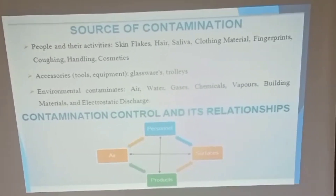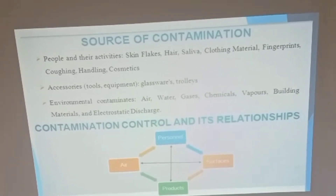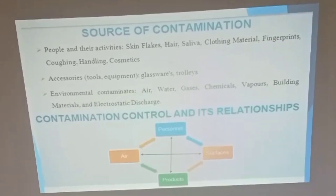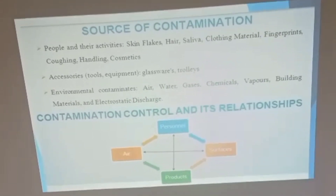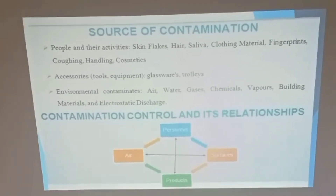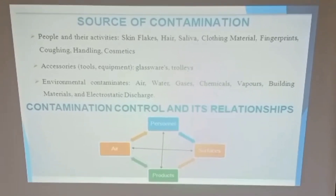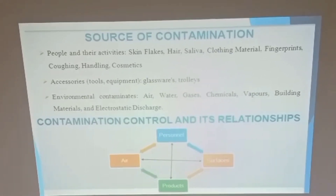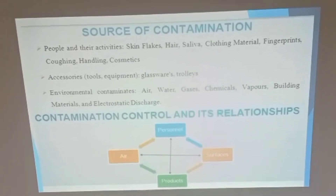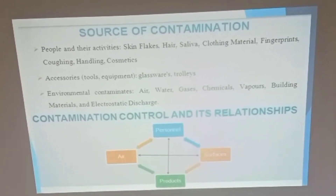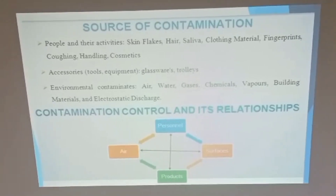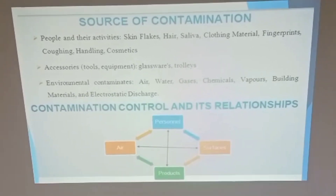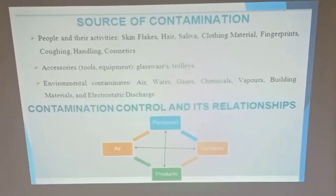The relationship between contaminants and contamination control is reversible. Contaminants can transfer from air to humans or humans to air, from air to product or product to air, from product to surface or surface to product, and from surface to personnel or personnel back to surface, as seen in the contamination relationship chart.